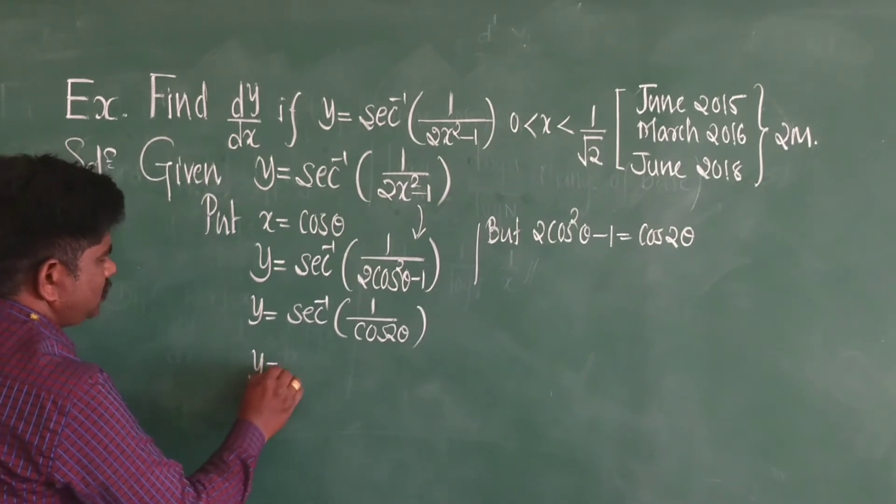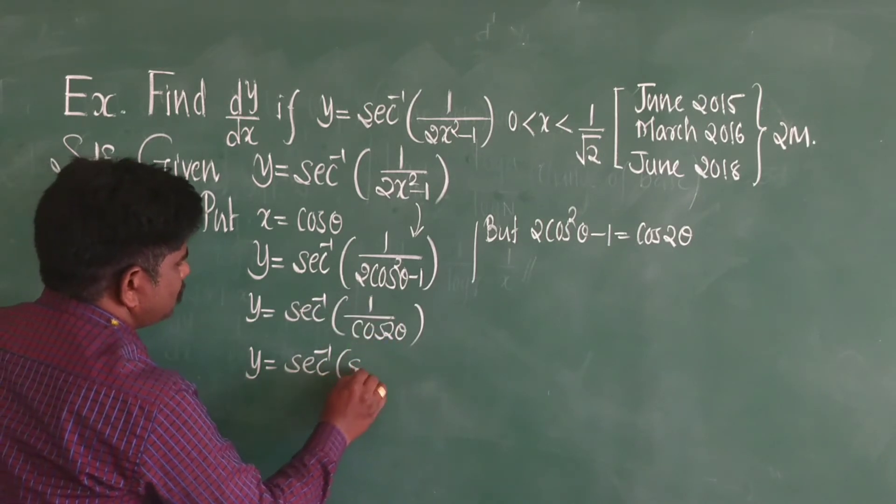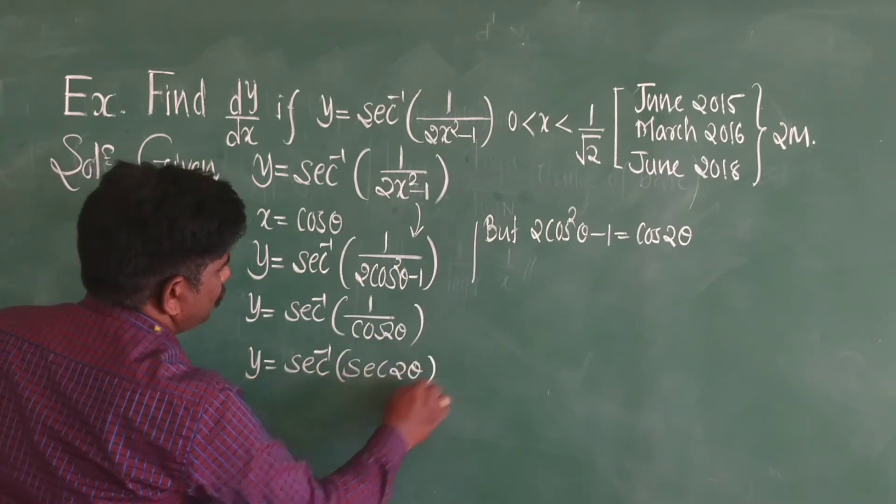Further, y is equal to sec inverse of, 1 upon cos is nothing but sec, so it becomes sec 2 theta.